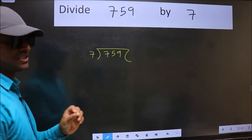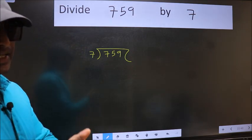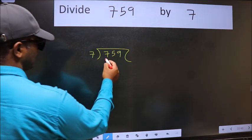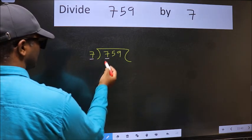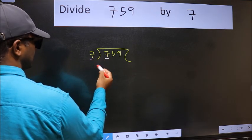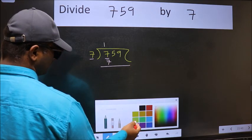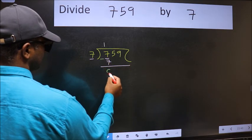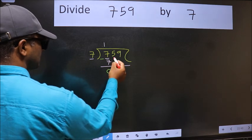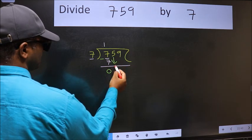This is your step one. Next, here we have seven and here seven. When do we get seven in the seven table? Seven once is seven. Now we should subtract. We get zero. After this, bring down the beside number, so five comes down.